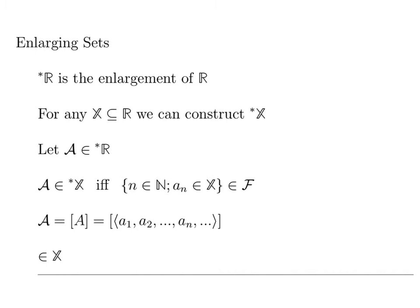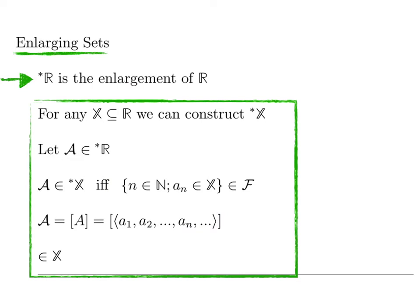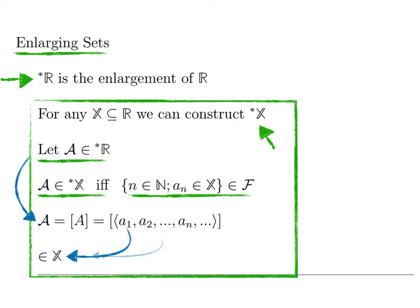Our first step is to introduce the enlargement of sets. We already know one example, which is the set star R, the enlargement of the real numbers. Let X be a subset of the real numbers, and we write star X for its enlargement into the hyperreals. Let a be a hyperreal number — remember that a is constructed as the equivalence class of a sequence of real numbers. We say that a belongs to star X if and only if the set of integers n for which a_n is an element of X belongs to the ultrafilter. In other words, when almost all the elements a_n in the sequence belong to X.